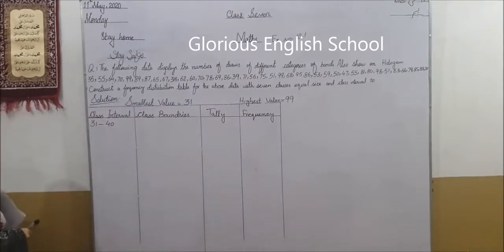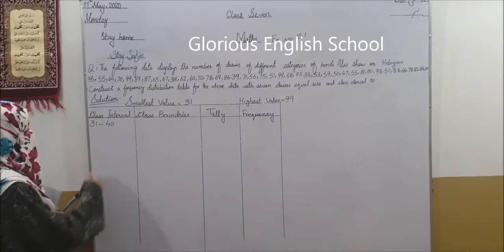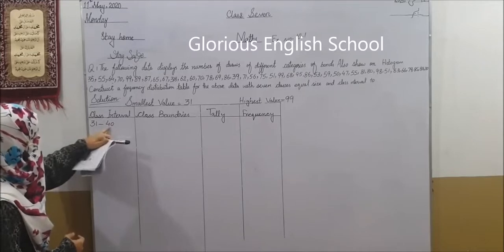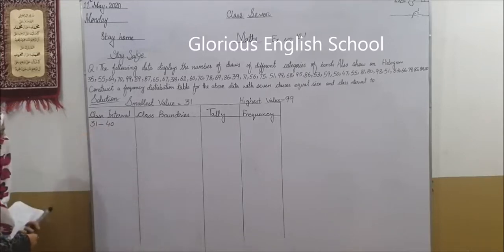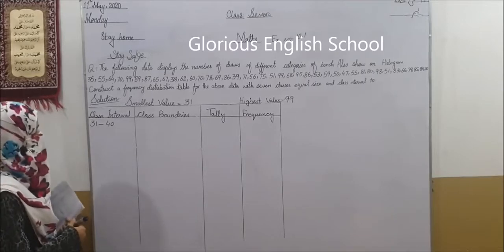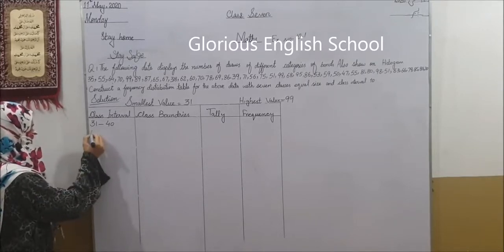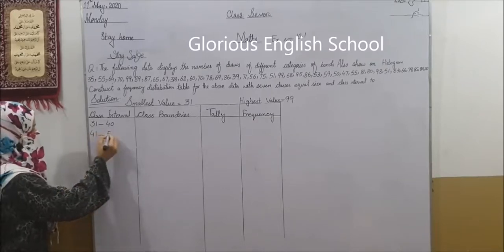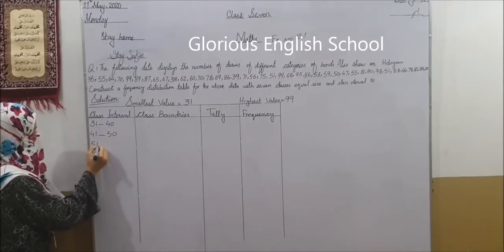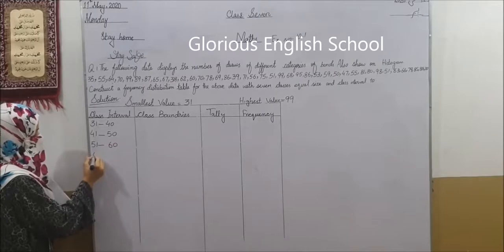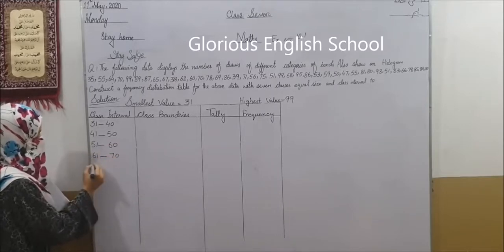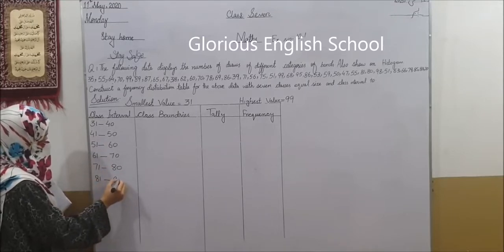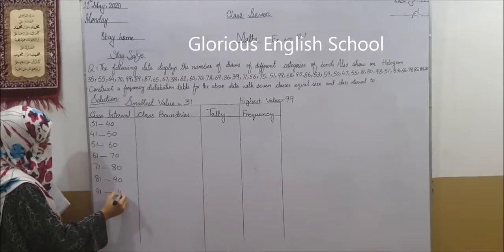The class interval size is 10. Starting from the smallest value 31, the class intervals are: 31–40, 41–50, 51–60, 61–70, 71–80, 81–90, and 91–100, giving us 7 classes total.